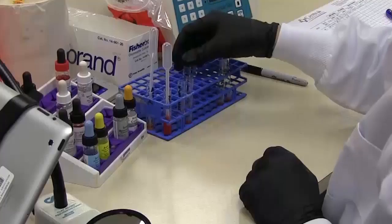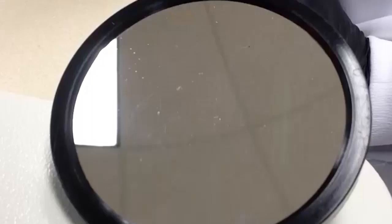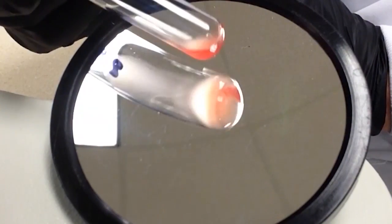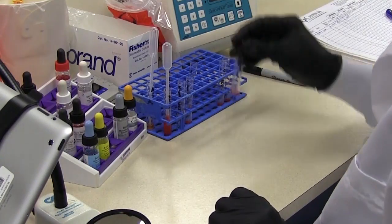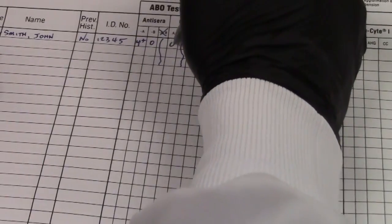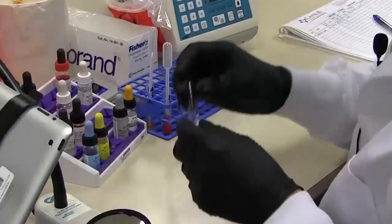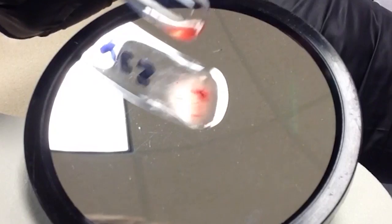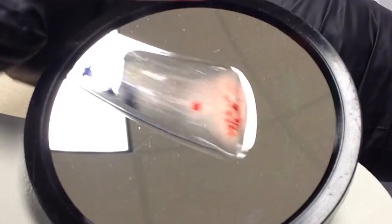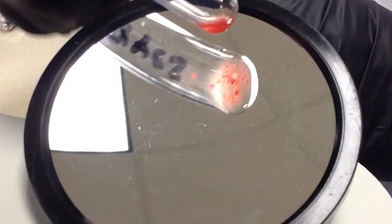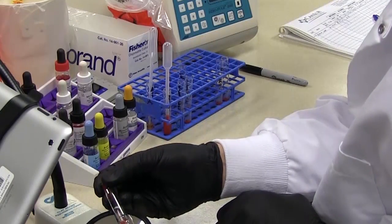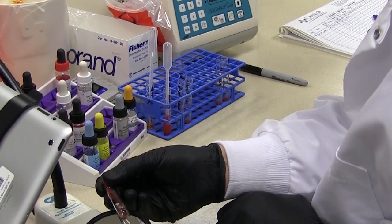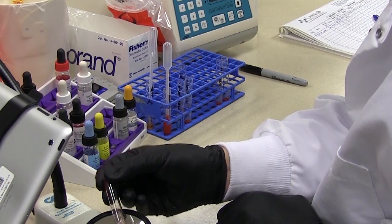All right let's go ahead and do our reverse typing. So here we have the A1 cells. Okay again smooth cell suspension. So A1 here with the cells is negative. Okay our last tube our B. Okay so now this is certainly not a four plus reaction here. I see some small chunks here as well as some larger ones and a pretty clear background. So we're going to call that a two plus.